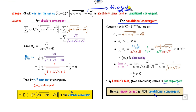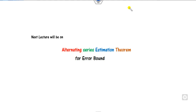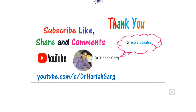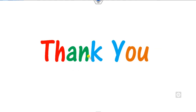This is the way to think about absolute and conditional convergence. I hope you have learned that. In the next lecture, we will cover the alternating series estimation theorem for the error bound — another important concept. I hope you like, share, and comment on these videos, and share with your friends. Best of luck, students.